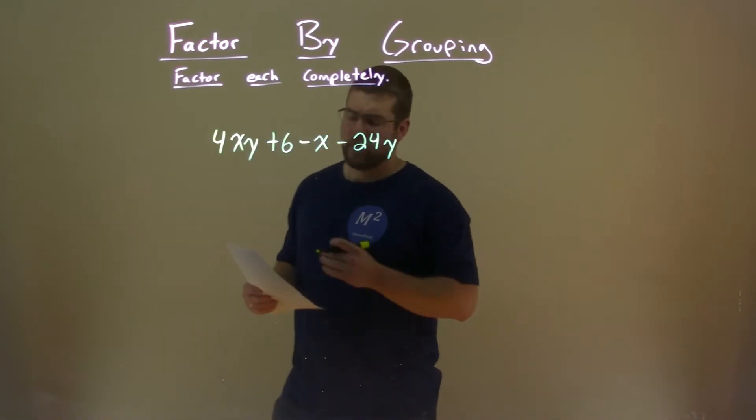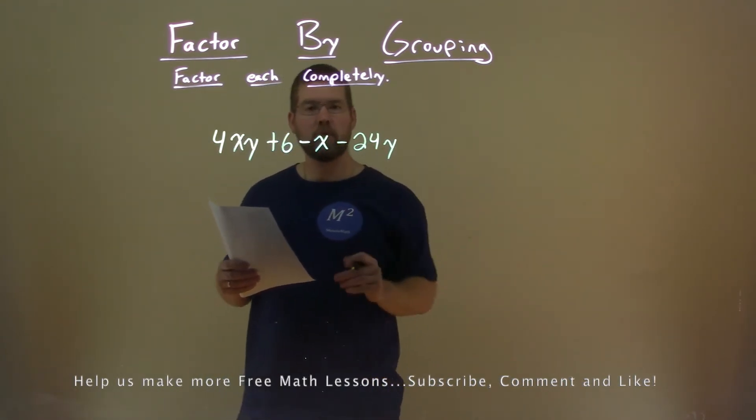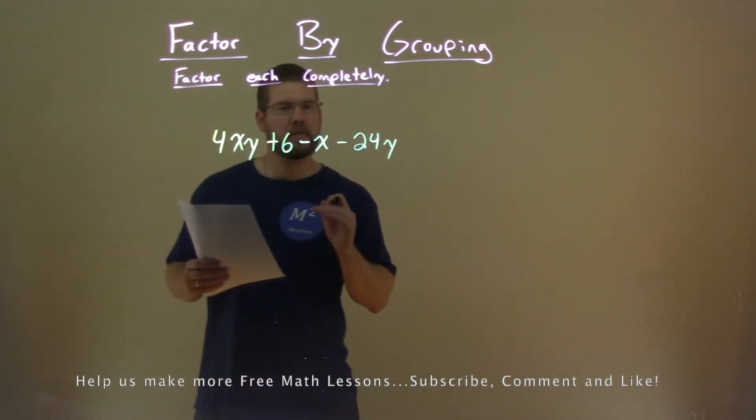We're given this problem right here: 4xy plus 6 minus x minus 24y, and we want to factor this completely.